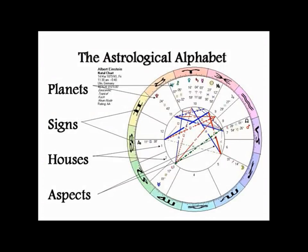Astrology is a language, and it has its own grammatical rules, and it has its own alphabet. We inevitably have to begin there. We have to begin with looking at all these different symbols.